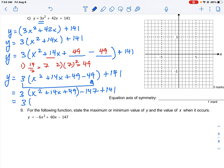So now I've got my equation in a point here where I can factor it. So the 3 still stays on the outside. This is going to just be x plus 7 squared, and then negative 147 plus 141 is going to give me minus 6.